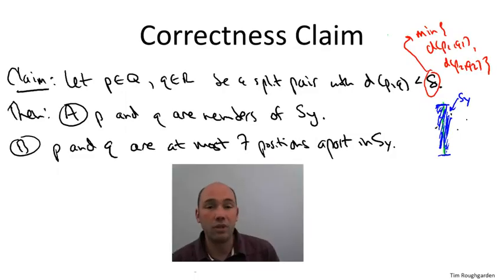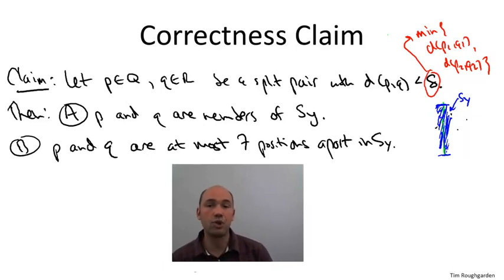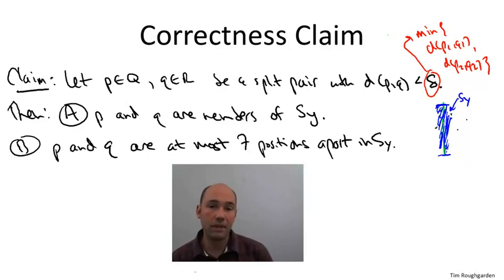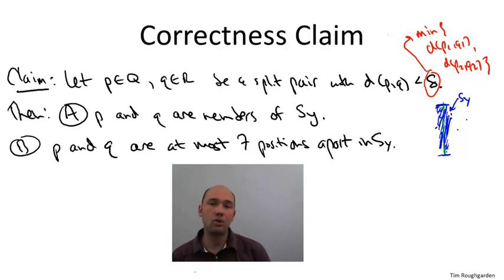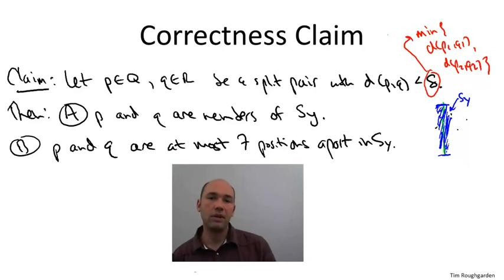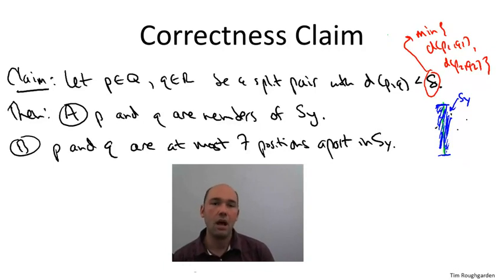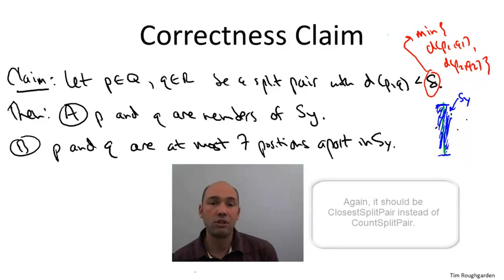The subroutine has two basic steps. First, a filtering step: it looks at a vertical strip roughly down the middle of the point set, keeping only points that fall into that strip — a subset called S_Y, sorted by y-coordinate. Then we do a linear scan through S_Y, and for each index i we look only at j's that are between one and seven positions further to the right, comparing those distances and returning the best such pair.